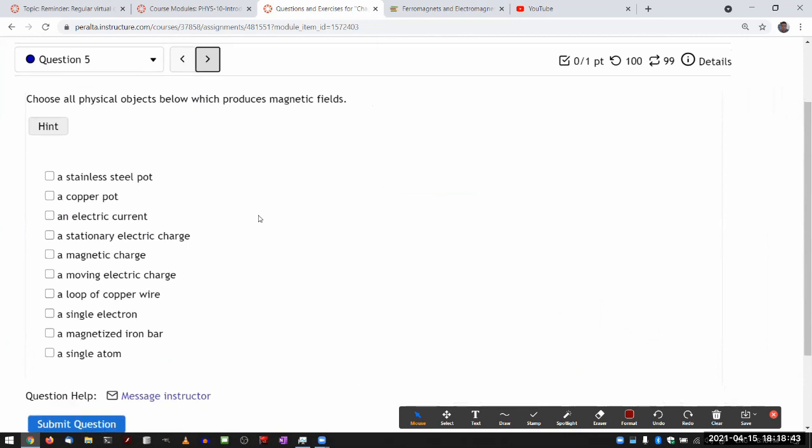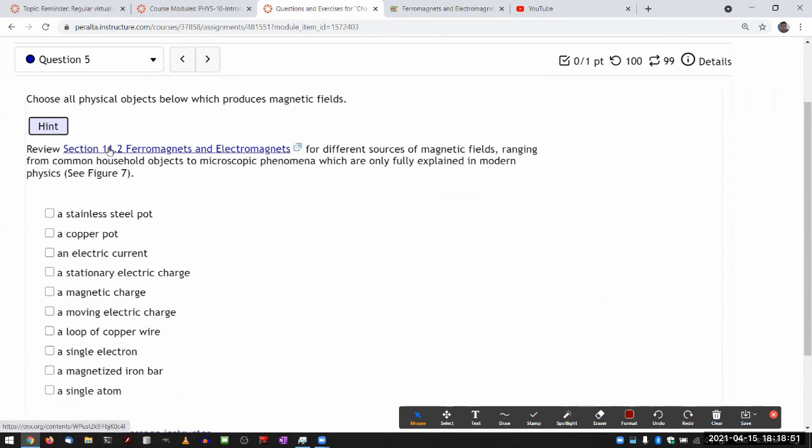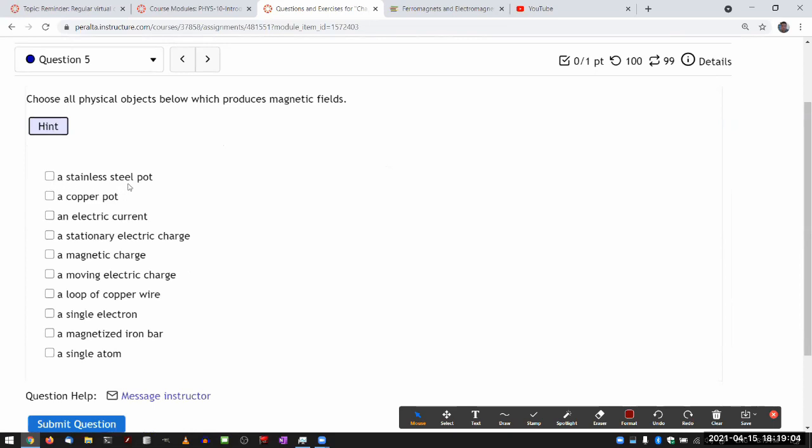Physical objects below which produces magnetic fields. I feel like this is probably new. So yeah, it's still about ferromagnets. Let me go through each one and just, I will give a brief explanation as I'm going through them. Stainless steel pot, I want to say no. I mean, it's ferromagnetic, but unless you magnetize it, it doesn't on its own produce magnetic field. And usually steel pots are not manufactured magnetized. Copper pot, it's not even ferromagnetic. So unless you pass an electric current through the copper pot, it's not going to produce magnetic field.